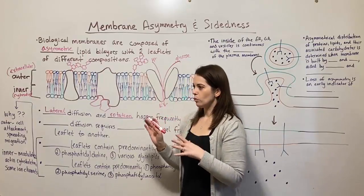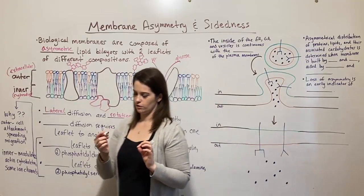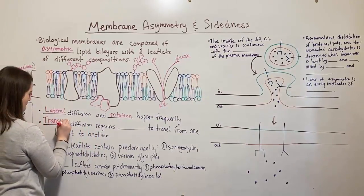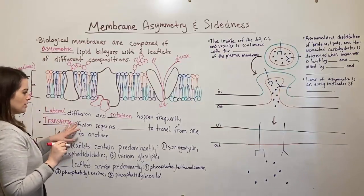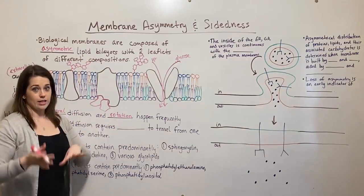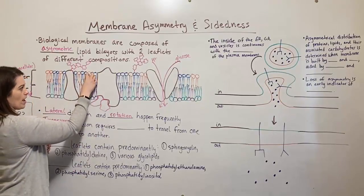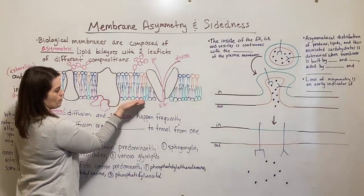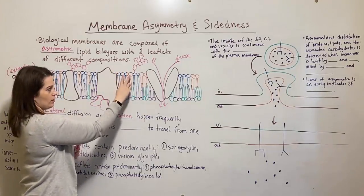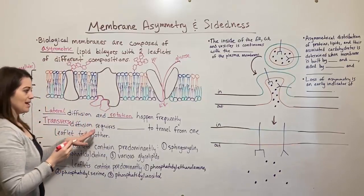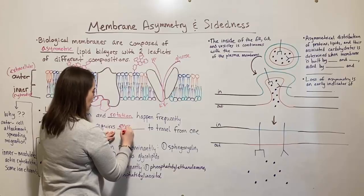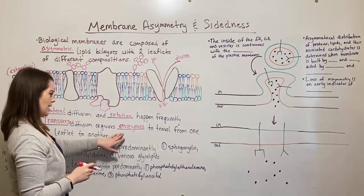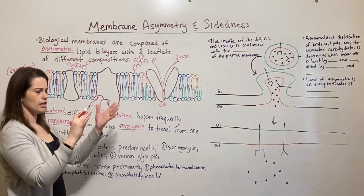What is more rare is what we call transverse diffusion. Transverse diffusion is movement from one leaflet to another — so a red phospholipid moving down to be with the purple and green ones, or a purple or green one moving from the inner leaflet up to the outer leaflet. That's the transverse diffusion. It does happen, but it requires enzymes known as flippases and floppases, which allow phospholipids to travel from one leaflet to another.